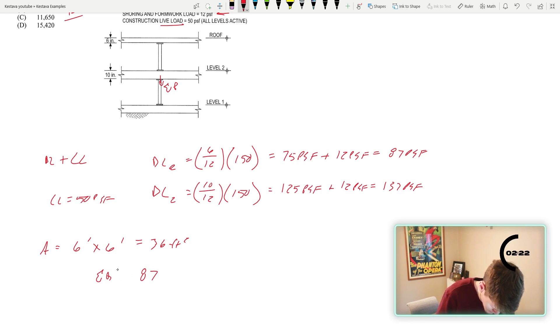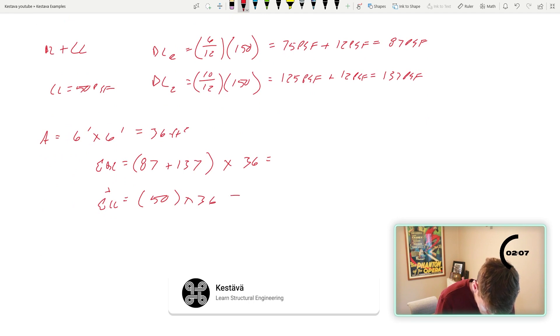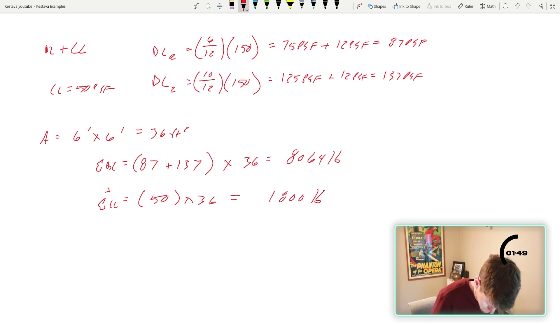Dead load is going to equal 87 plus 137 for total dead load times the area of 36. And then it's going to be summation live load equals 50 times 36. Both those. Okay. So 87 plus 137 times 36, 8,000 pounds, 50 times 36 is 1800 pounds. What's wrong here? Two floors of that. Two floors of that 36.